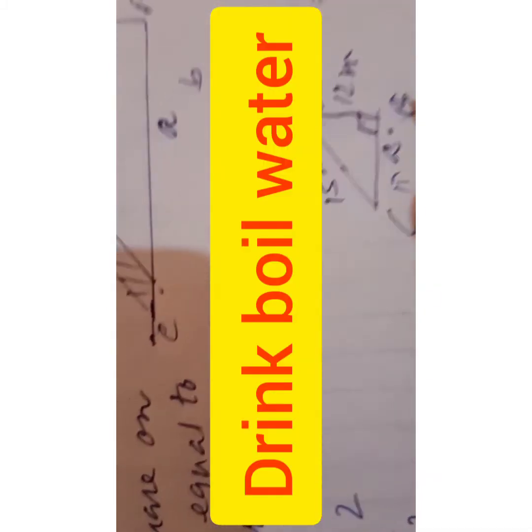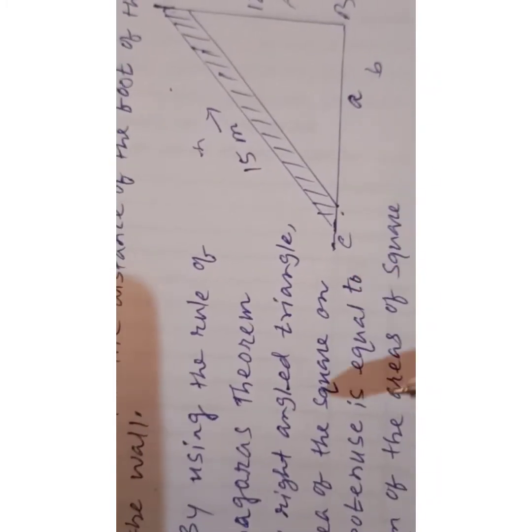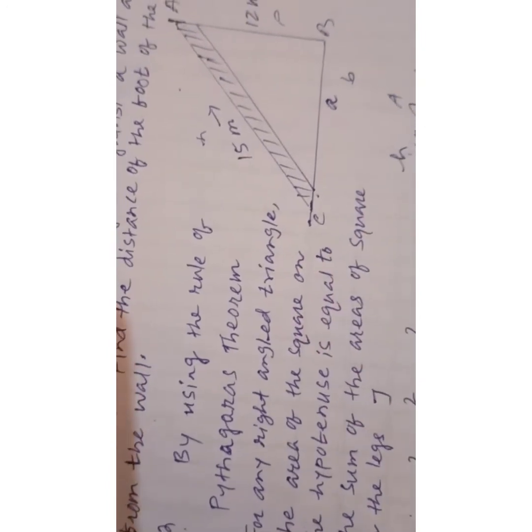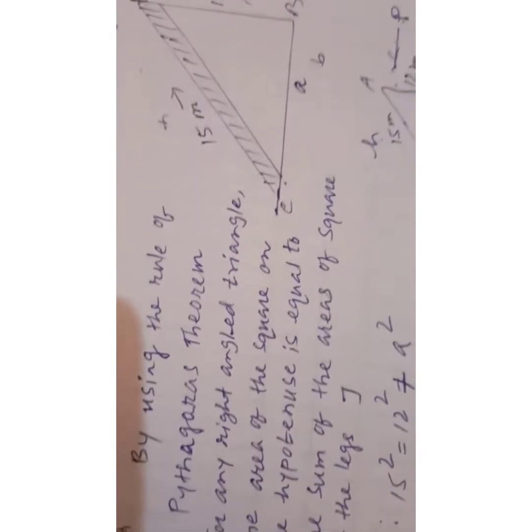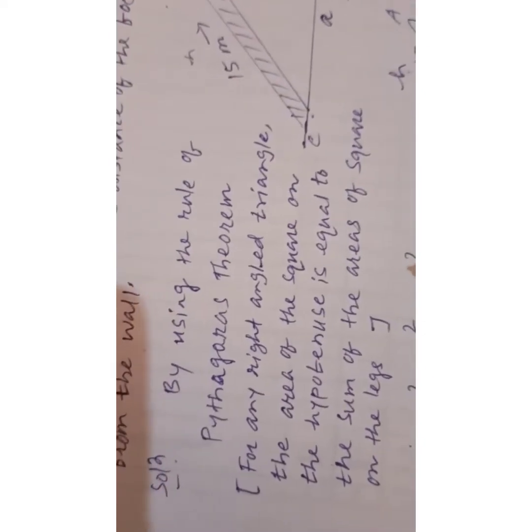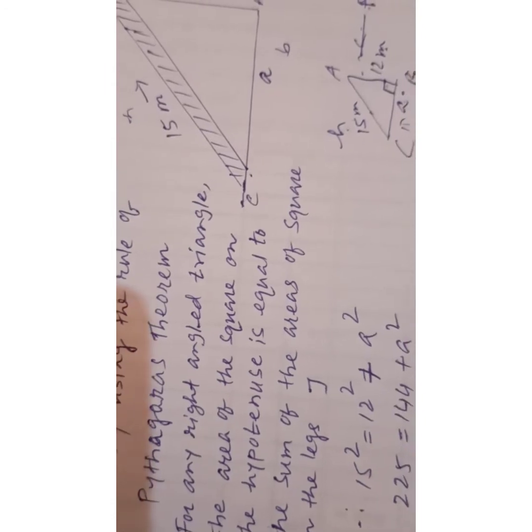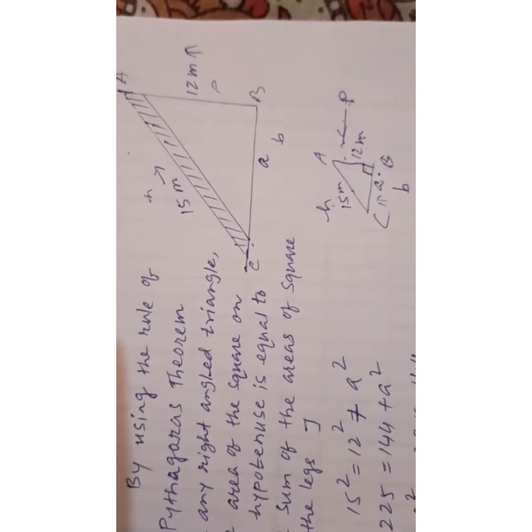By using Pythagoras theorem: for any right-angle triangle, the area of the square on the hypotenuse is equal to the sum of the areas of squares on the legs. This means hypotenuse square equals base square plus perpendicular square. H² = B² + P².